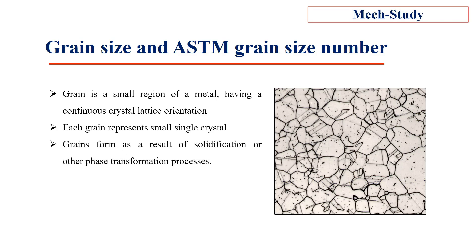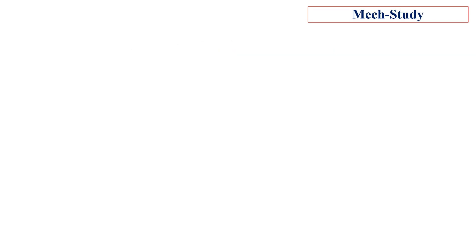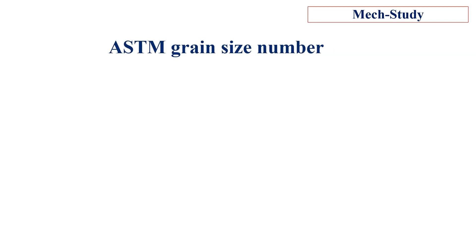Grains are formed as a result of solidification or other phase transformation processes. The grain structure of a solid is an arrangement of differently oriented grains surrounded by grain boundaries. ASTM stands for American Society of Testing and Materials.